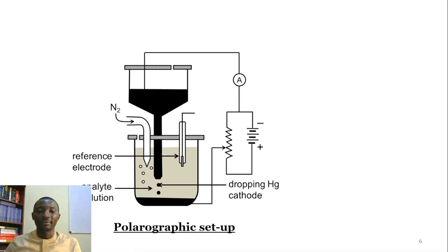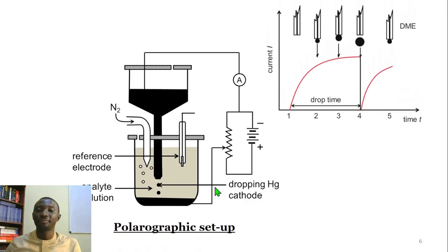So here is the setup for polarography, replacing voltammetry. This is the analyte solution. This is the reference electrode, and this is the dropping mercury cathode. This setup is connected to some voltage source, and there is an ammeter there to measure the current across the setup. Nitrogen is bubbled in to get rid of some oxygen that may be in there. And this setup is then used to determine information about the analyte solution.